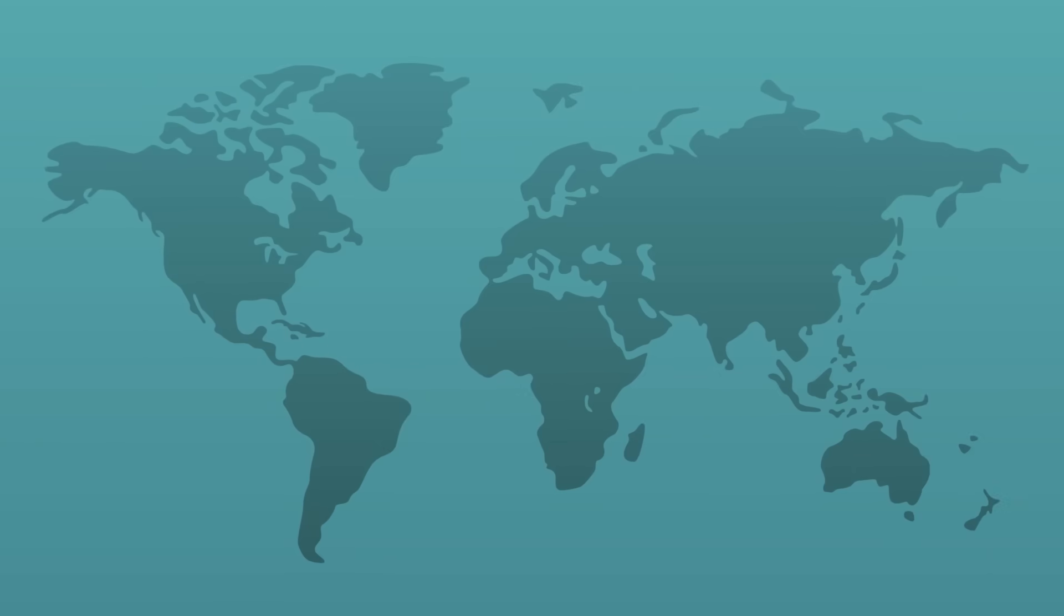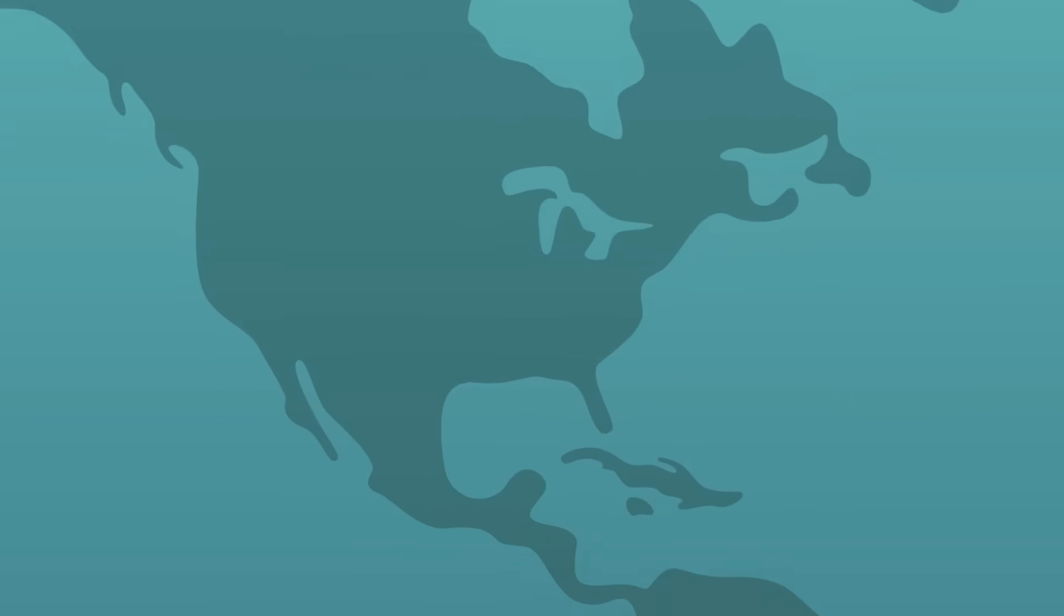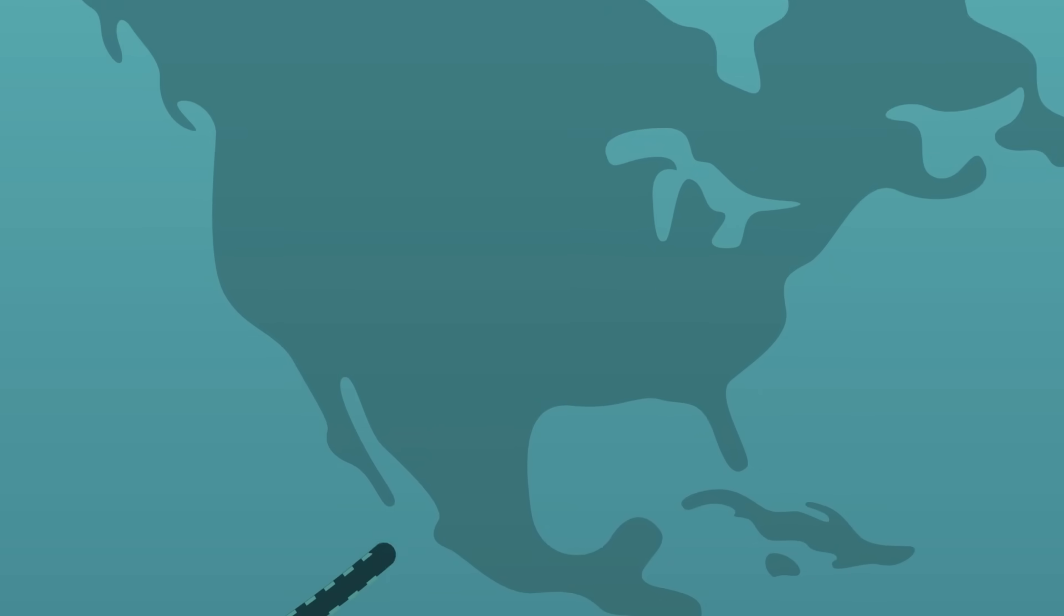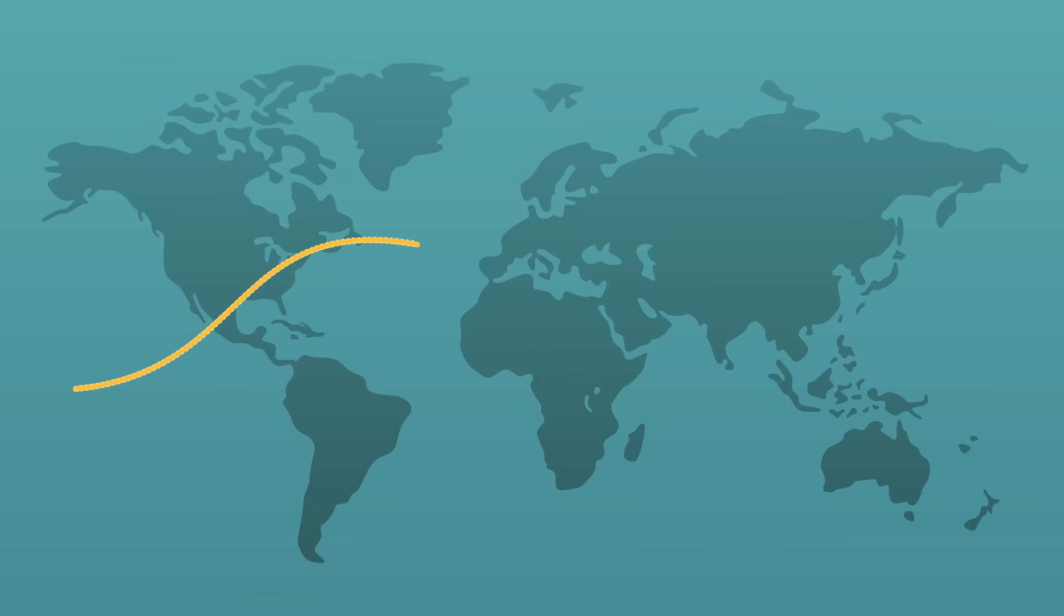But not everyone gets to see the show. The eclipse is my shadow cast on Earth blocking out the Sun. If you're standing in a spot covered by shadow, it will look like nighttime. But my shadow can't cover the globe, so most areas will be left out.